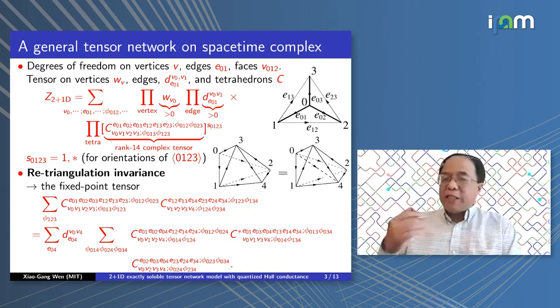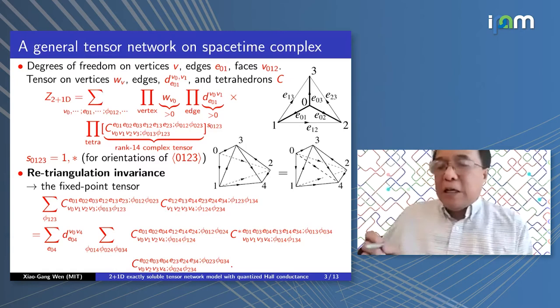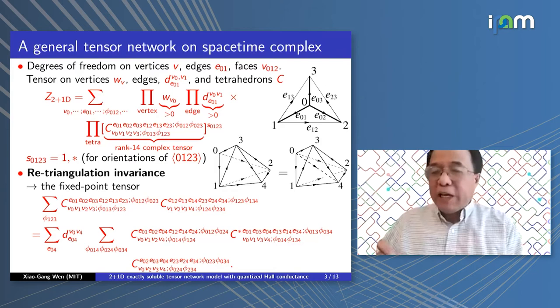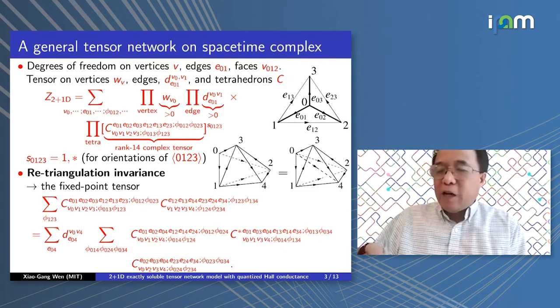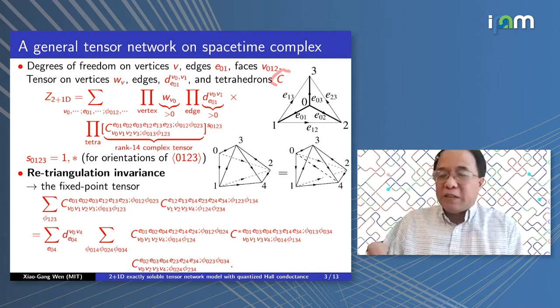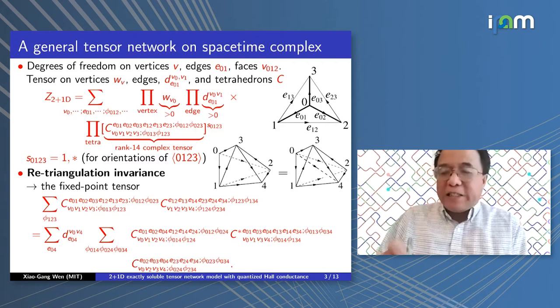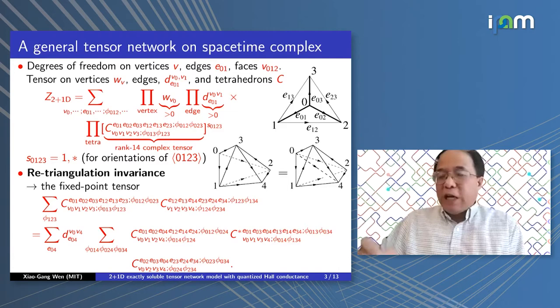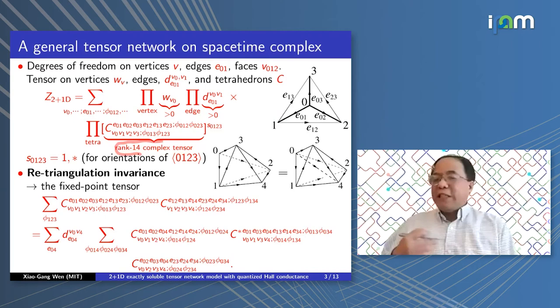In this setup I can present a more general tensor network. Imagine we have a space-time triangulation — mathematically called a simplicial complex — here drawn for the three-dimensional or 2+1 dimensional case. The basic cells are tetrahedra. For each tetrahedron we associate a tensor called C. We generalize by allowing indices for physical degrees of freedom to live on the vertex (v), on the edge (e), or on the face (f). Therefore this tensor for a single tetrahedron is actually a rank-14 complex tensor.